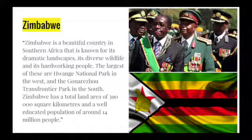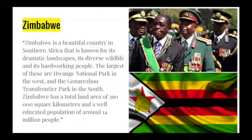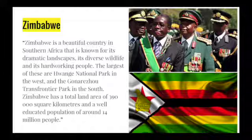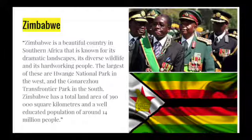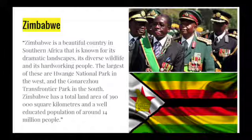Zimbabwe is a beautiful country in southern Africa. It's known for dramatic landscapes and diverse wildlife. It has a ton of hardworking people. It has the largest of all the national parks in the west and the Gonsu Frontier Park in the south. Zimbabwe has a total land area of 390,000 square kilometers and a well-educated population of around 14 million people.